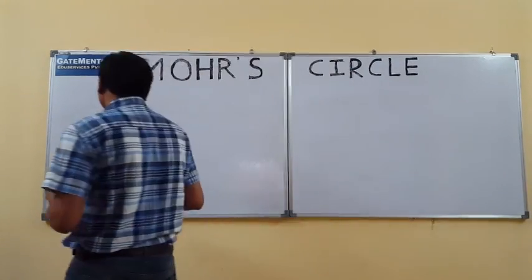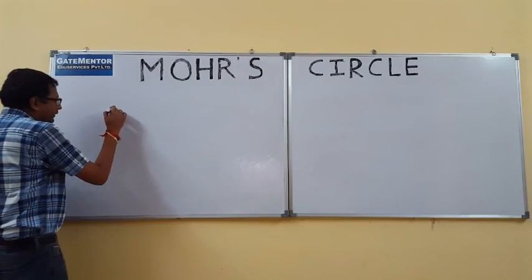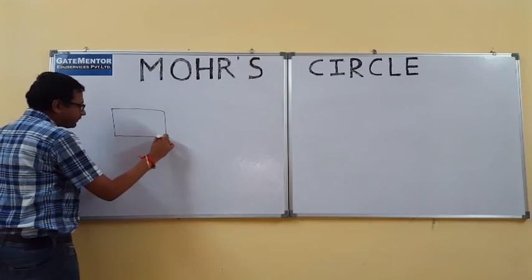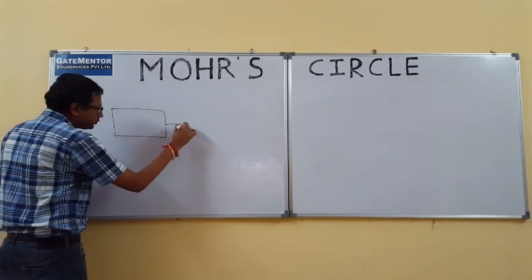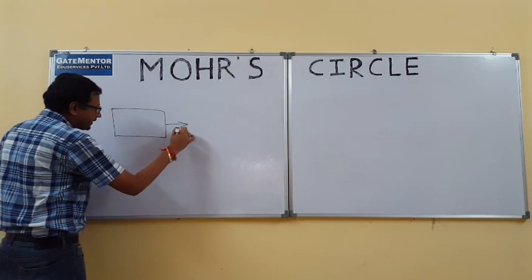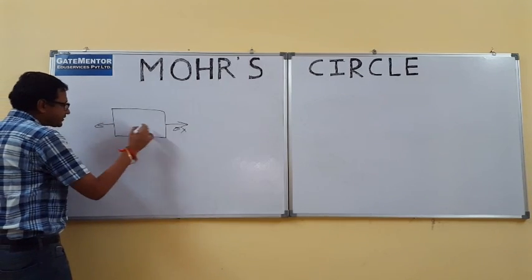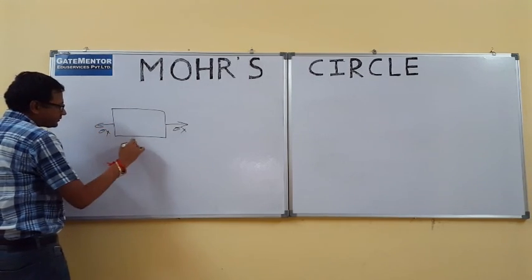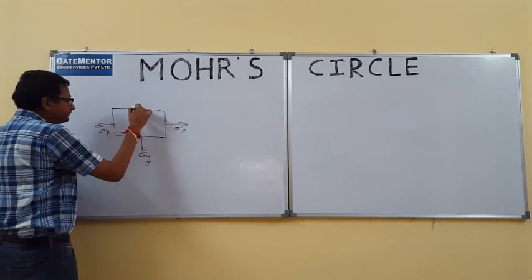I am starting with a very simple example. Let's consider a bar. This bar is subjected to two normal stresses — one in the x-direction and one in the y-direction. So in the x-direction we have sigma x, and in the y-direction we have sigma y.